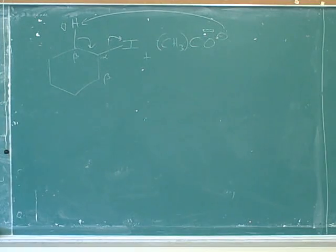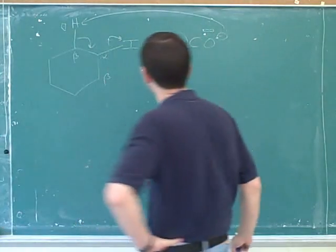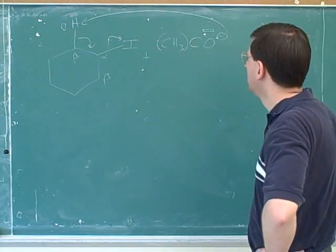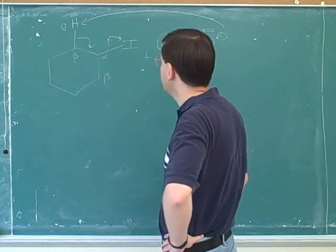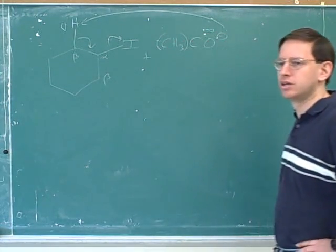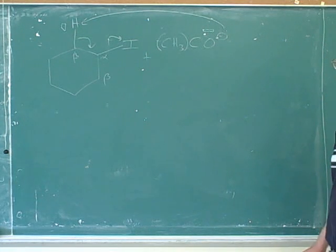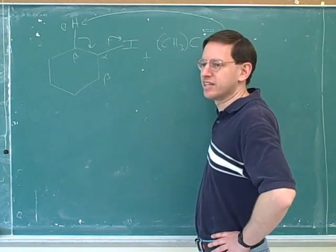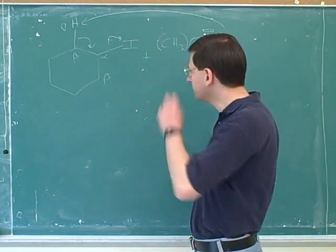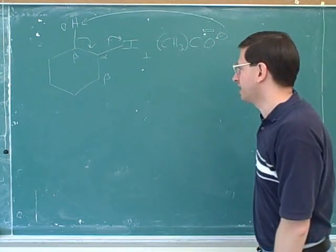Okay, now, so to review what we've done here so far, let's see, how do you know this is going to be an E2? Because of the bulky base and it's on a secondary. Yeah, secondary and a strong bulky base, that's an E2. This is almost always an E2. And then you were going through the mechanism.